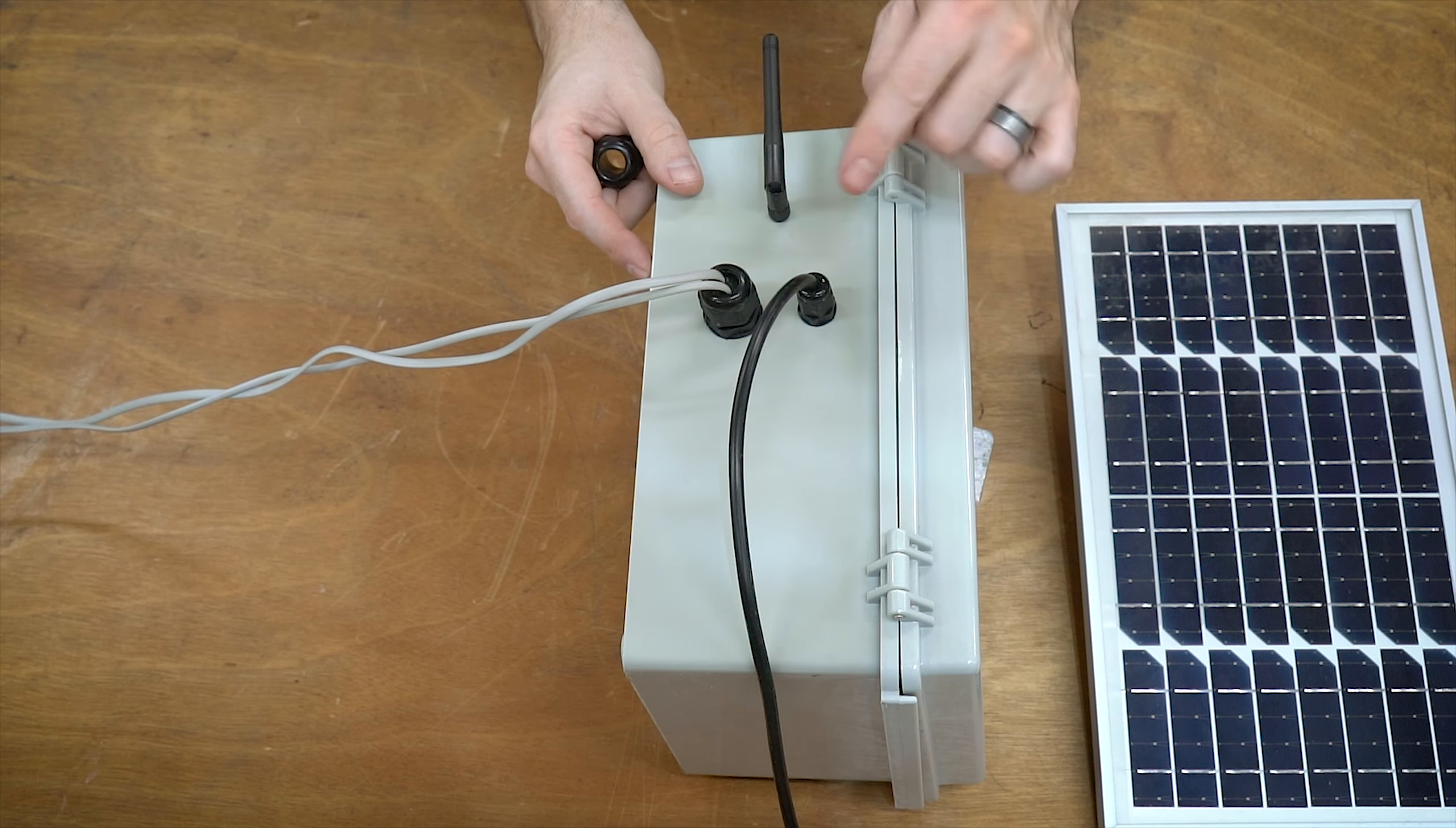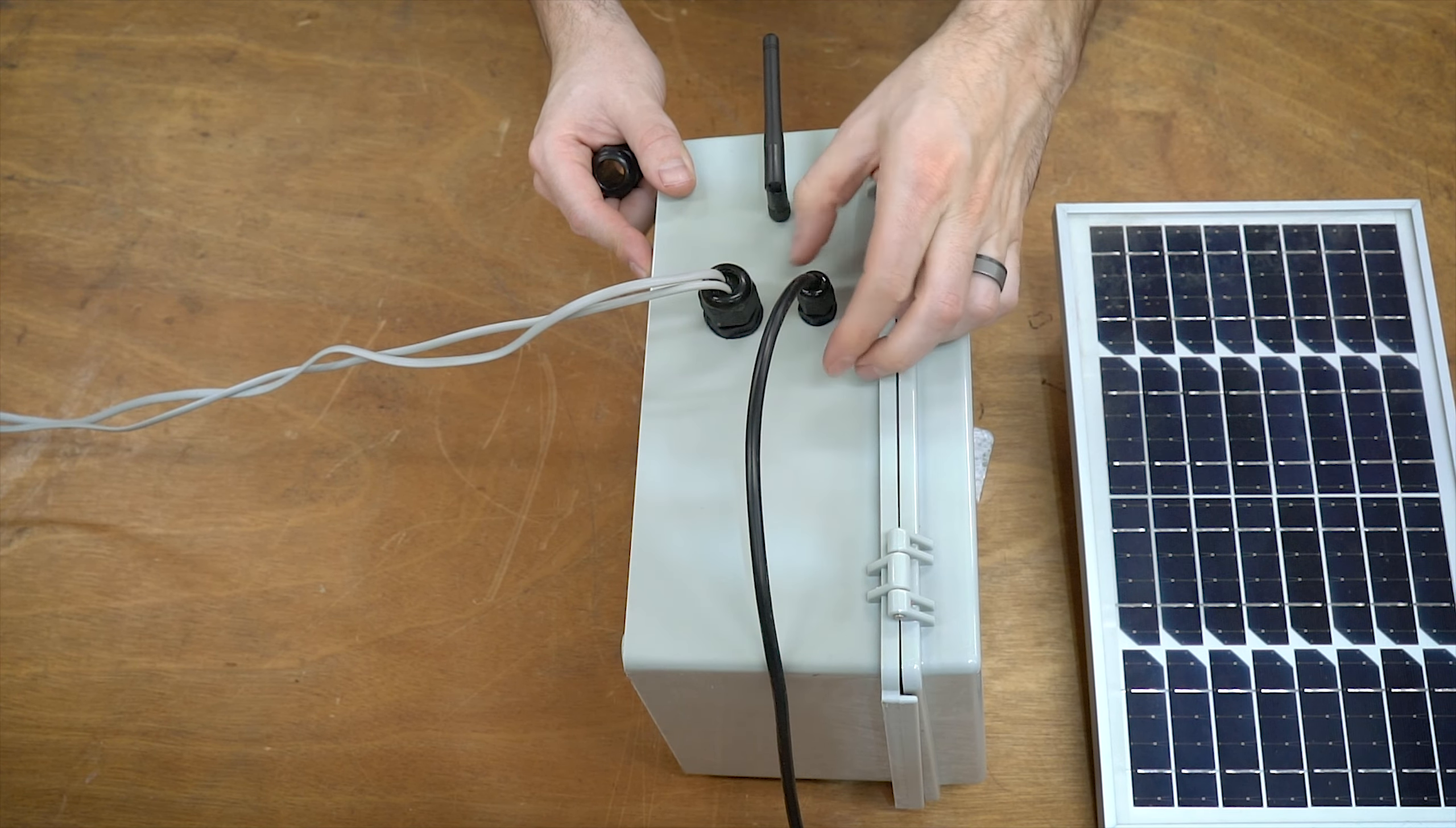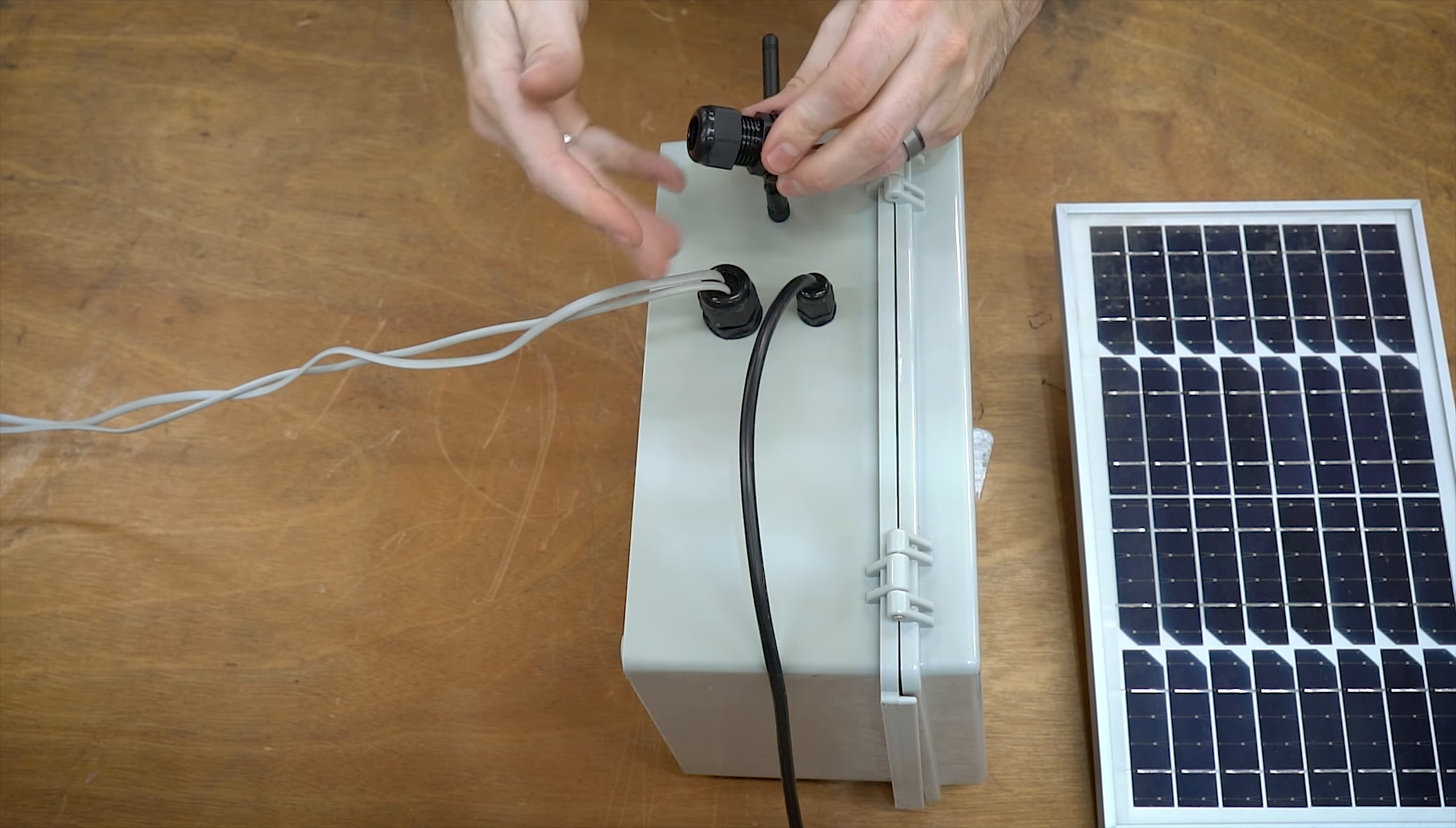So the last thing I want to talk about are cable glands. People don't always end up using these, and they're really helpful. You can get these in a large assortment, but they're really useful for making these watertight connectors, something like that. They're double-ended and they have a little sleeve on the inside.